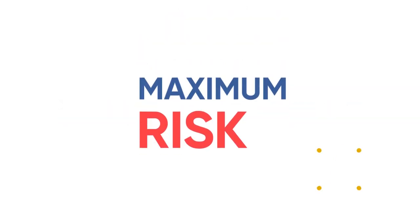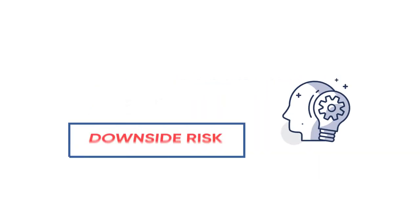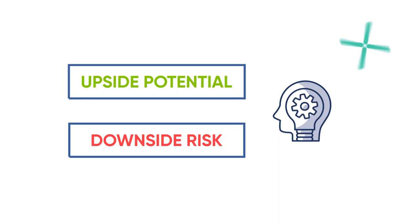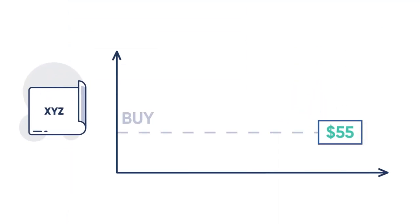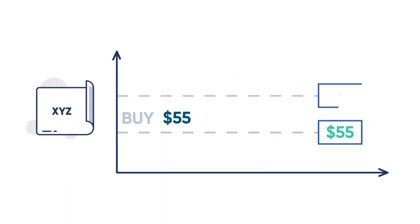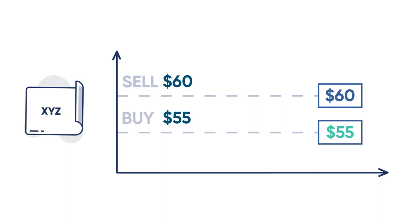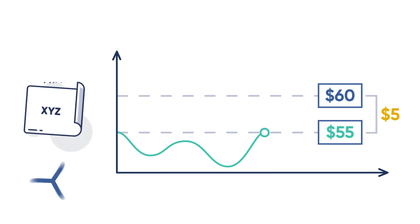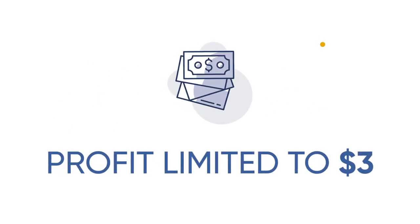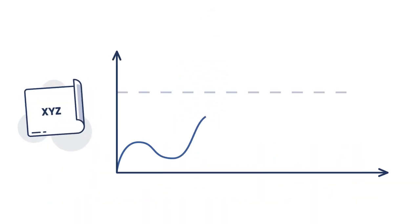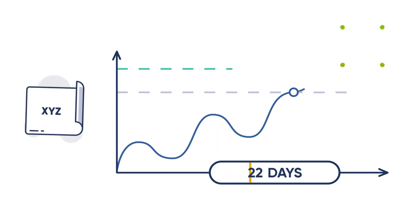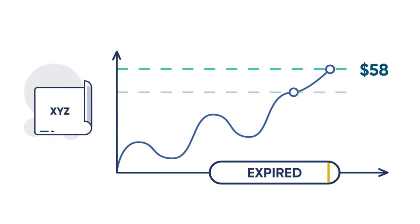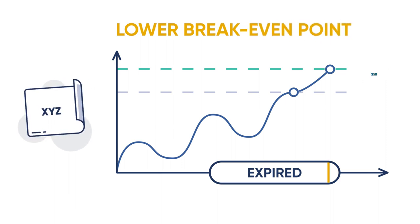This $2 is also the maximum risk in the trade until expiration. Remember that while the downside risk is limited, your upside potential is also limited. Purchasing the 55 call gives you the right to buy shares at $55, but selling the 60 call obligates you to sell those shares at $60. If assigned, the maximum that your trade can ever be worth is $5. After paying $2, your maximum profit is limited to $3. You also benefit from a lower break-even point — buying the 55 call for $3 means a break-even of $58 at expiration, but by paying $2 for the spread, your break-even is $1 lower at $57.